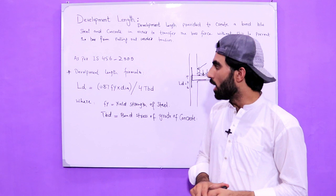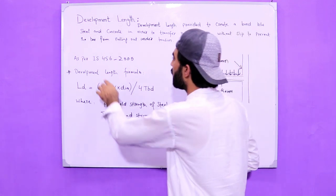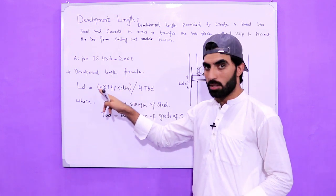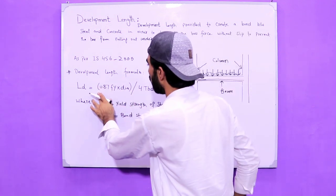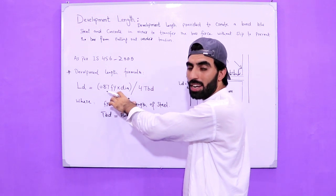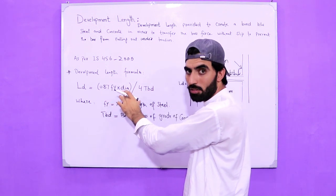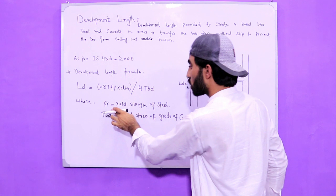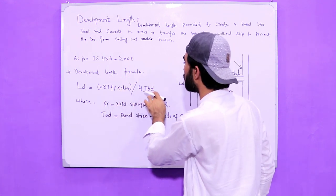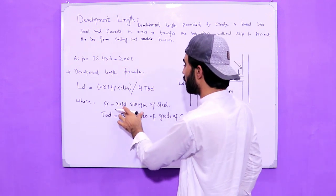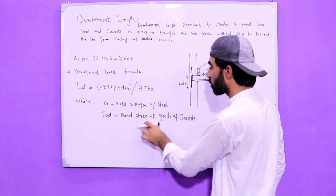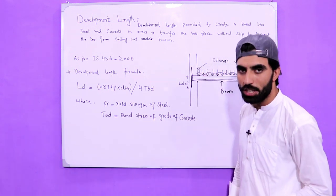Now, what's the formula for development length? As per IS 456:2000, the development length formula is: Ld = 0.87 × fy × dia / (4 × τbd), where fy is the yield strength of steel and τbd is the bond stress based on the grade of concrete.